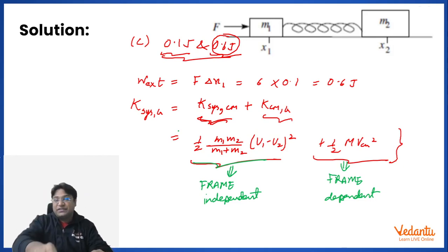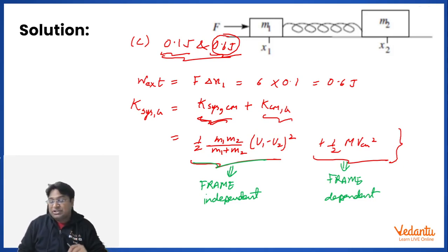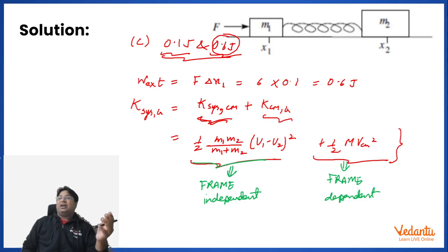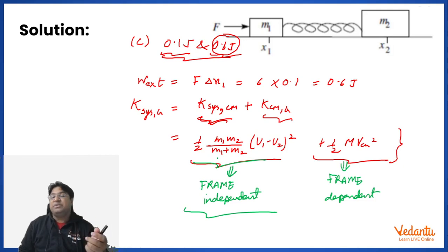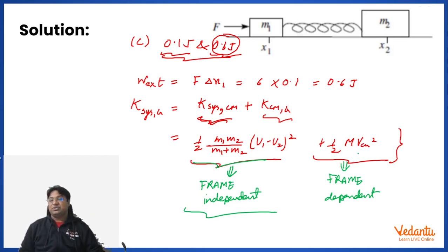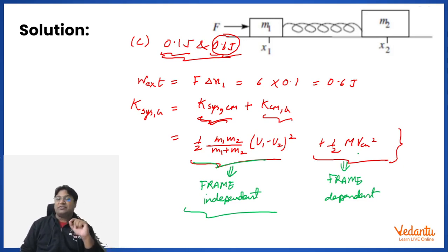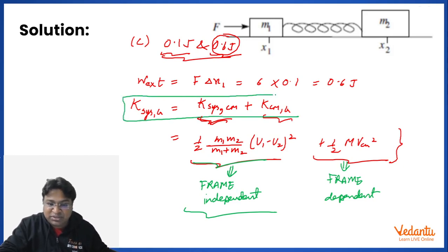This splitting reveals something significant: if you change frames, only the CM kinetic energy term changes while the relative-velocity term stays constant. The minimum kinetic energy of a two-particle system observed from any frame occurs in the center of mass frame, because V_CM becomes zero there, making the second term vanish — a very useful result to remember.